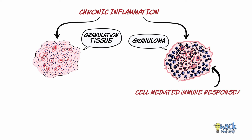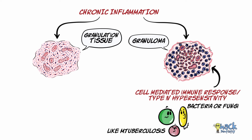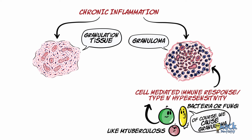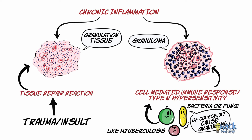Granuloma is a product of cell-mediated immune response, a type 4 hypersensitivity reaction caused by agents like bacteria or fungi, for example. On the other hand, granulation tissue is basically the hallmark of tissue repair — tissue that is formed when the body tries to heal itself.